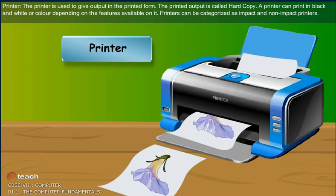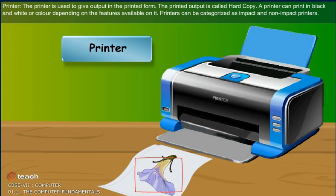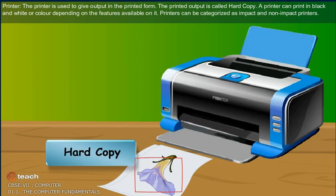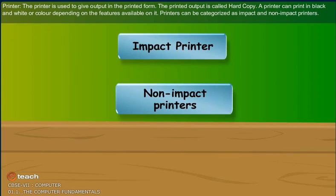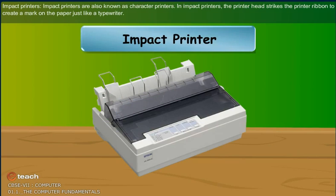Printer: The printer is used to give output in the printed form. The printed output is called hard copy. A printer can print in black and white or color depending on the features available on it. Printers can be categorized as impact and non-impact printers.